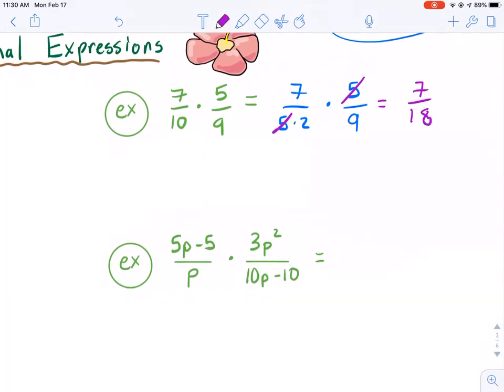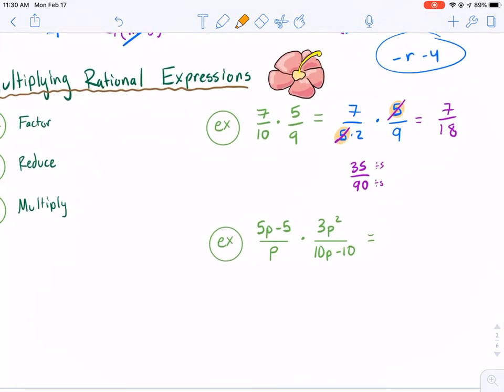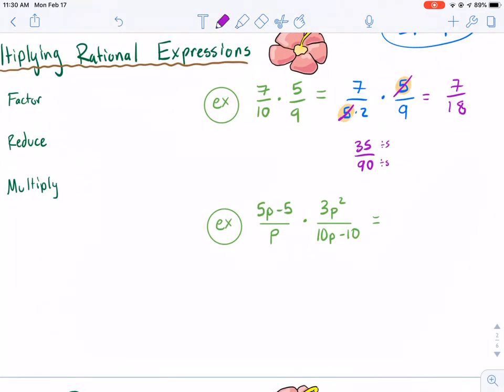Now, if you were to go the other way, the long route, and just multiply 35 over 90, you can see that you can divide both of these by 5 after you're done. Notice how 5 was the number that we canceled. So by first factoring, you can reduce your workload and make it a little bit easier for you to arrive at your answers.